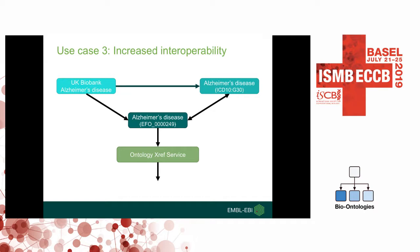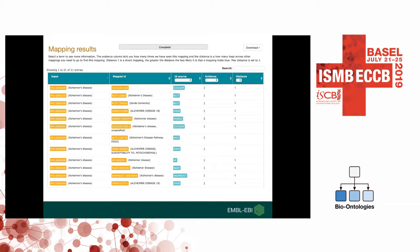A third use case is increasing interoperability. As previously mentioned, some of the traits — but not all — have been mapped to ICD-10 codes. While that's more ideal than no mapping at all, ICD-10 doesn't provide optimal, interoperable, and harmonizing vocabulary. EFO imports terms from and contains cross-references to many different ontologies, and consequently EFO acts as a bridge ontology, where an ICD-10 code can be mapped to an EFO term, which then cross-references many different ontologies. For example, the UK Biobank trait for Alzheimer's maps to the ICD-10 code for Alzheimer's disease, and both map to an EFO term, which using our ontology cross-referencing service maps to many other ontology terms such as NCIT, OMIM, Mondo, and HPO.